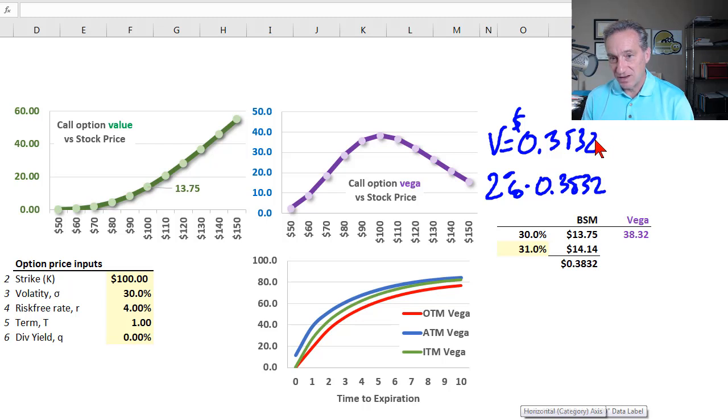It's an estimated dollar change in the call price, not a percentage of the call price. In the spreadsheet, I've shown another plot. The x-axis is time to expiration. Now that I've shown you the formula, the shape here makes sense. Square root of time gives this non-linear shape, but decidedly Vega is increasing with time to expiration in a non-linear way.